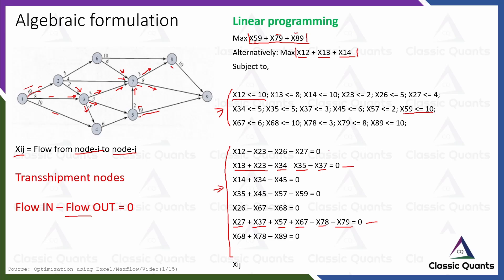There are seven transshipment constraints in total, covering nodes 2, 3, 4, 5, 6, 7, and 8 — all the intermediate transshipment nodes. Finally, there is the non-negativity constraint. Unlike the shortest path problem, which is a binary integer program, this is a purely linear program, and therefore we use xij ≥ 0 for all xij.